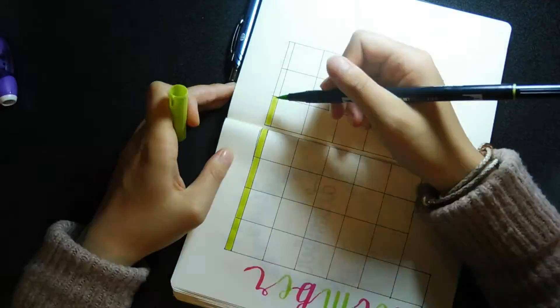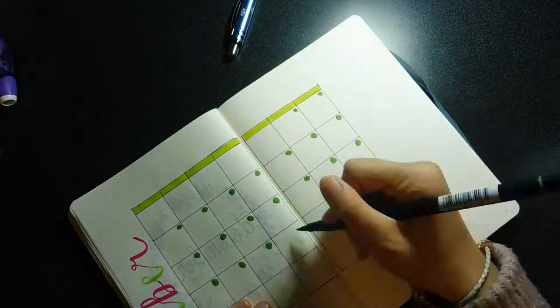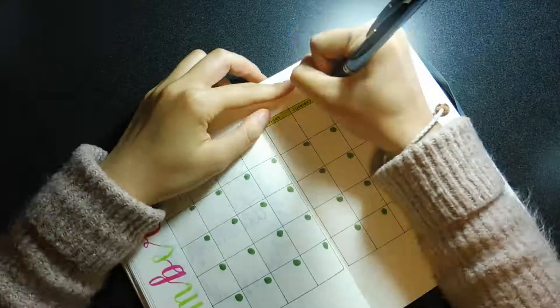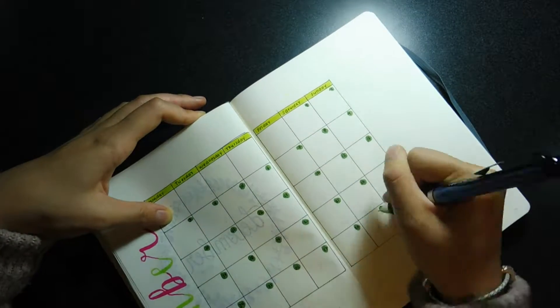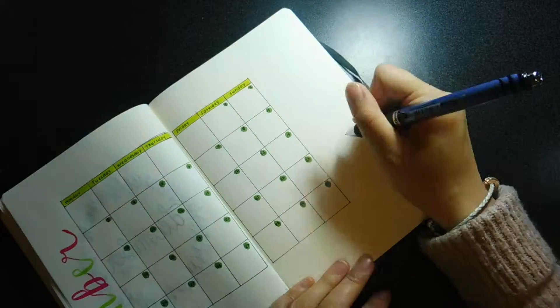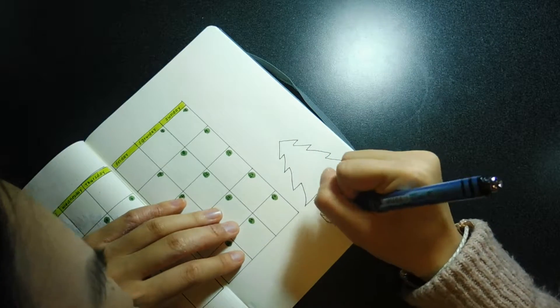Then I lettered in December alternating red and green Tombow dual brush pens because I felt really extra, and then basically just numbered in my calendar from 1 to 31. Then my camera cuts out, but I was literally just filling in the numbers for the dates.